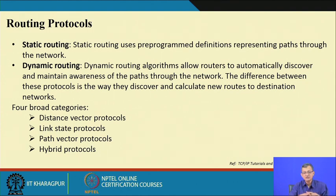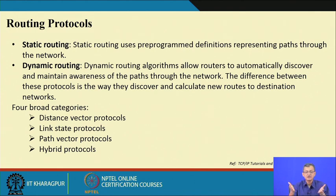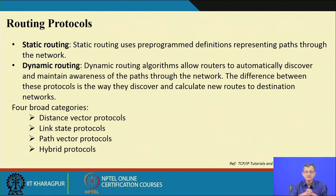The internet is a dynamic phenomenon — routes are being added or deleted dynamically. This is not under a single administrative control. So a router needs to update its routing table dynamically based on frequency and other objectives in order to maintain appropriate routing.